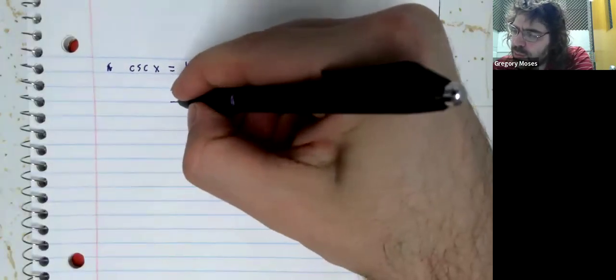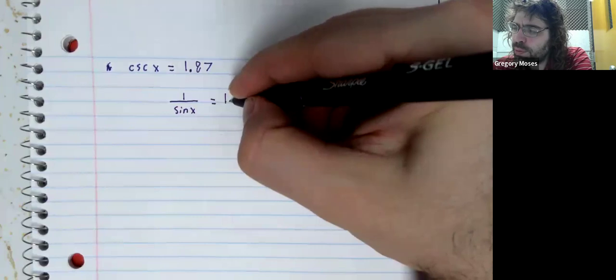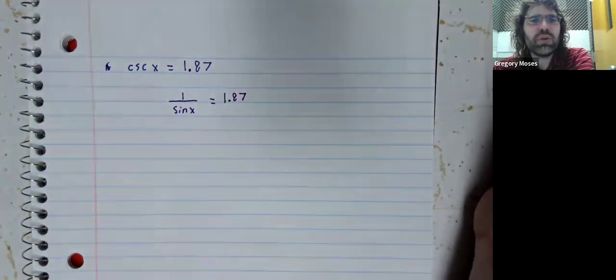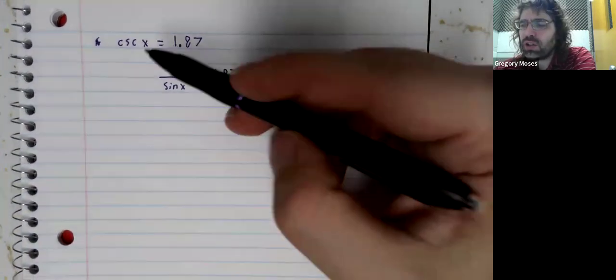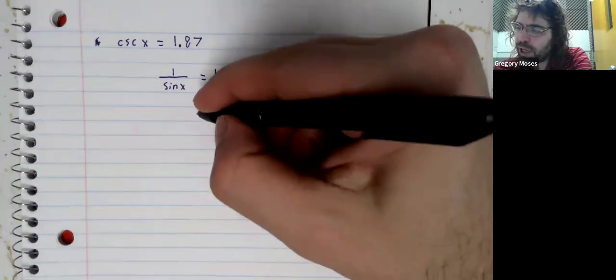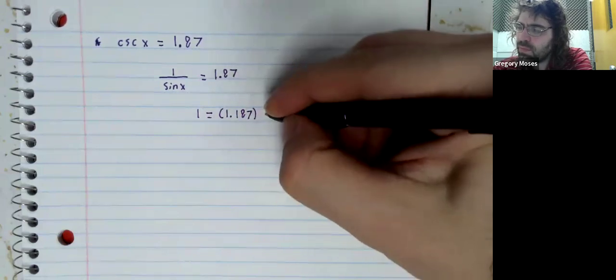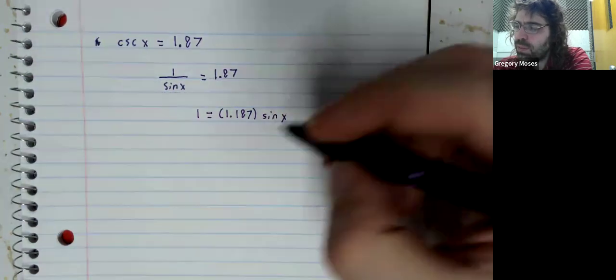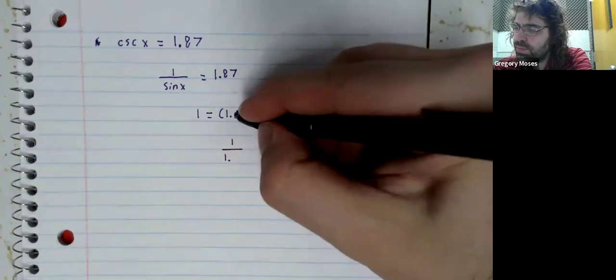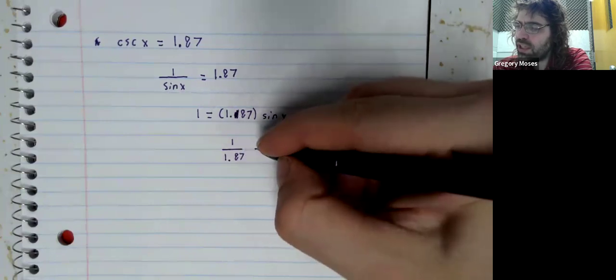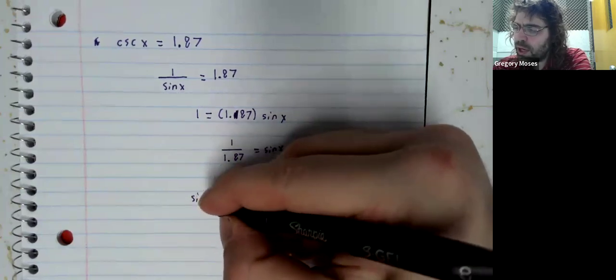So, I don't want to dwell too much on this example, because I think this video is probably long enough already. But we remember that the cosecant is 1 divided by the sine. We can divide both sides by 1.87.